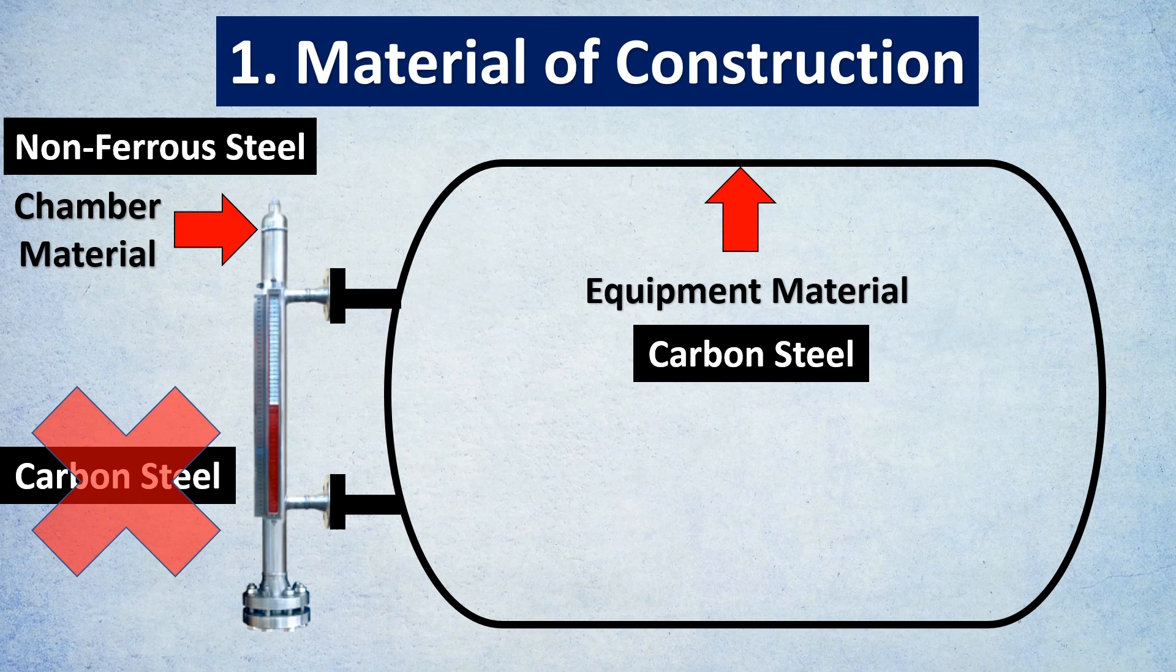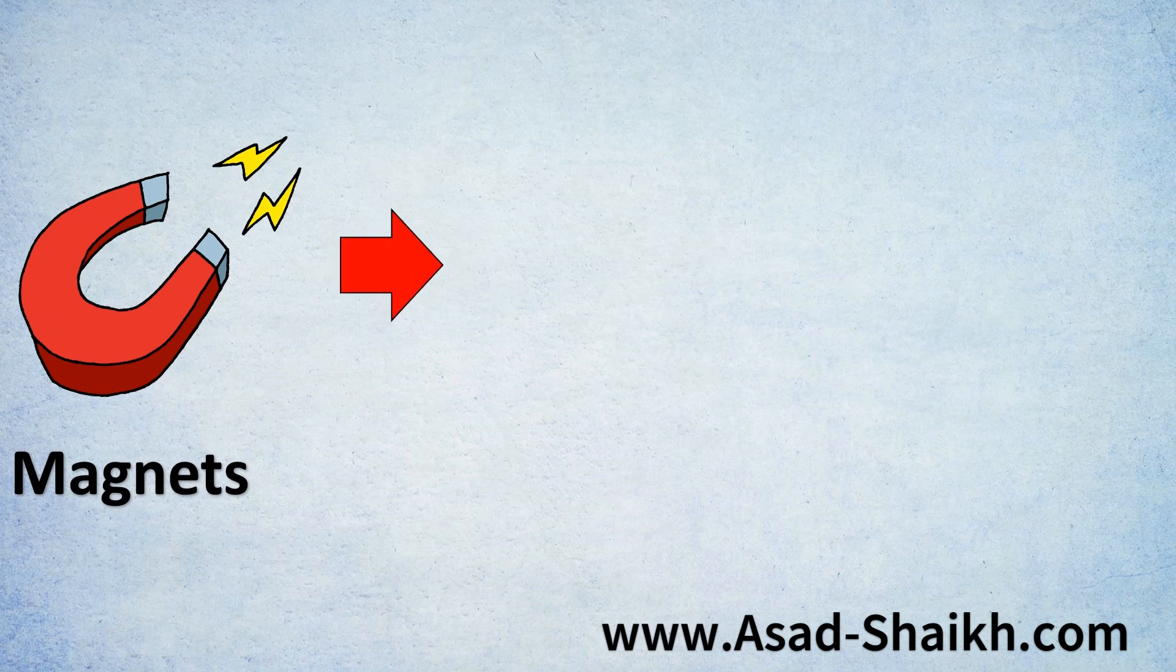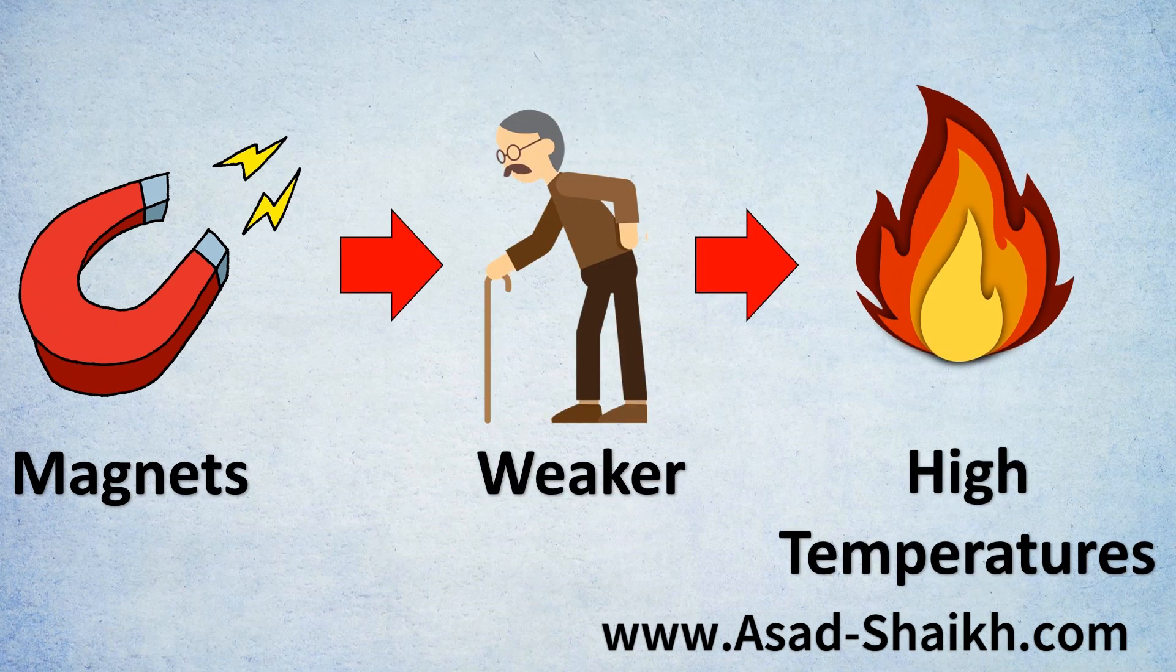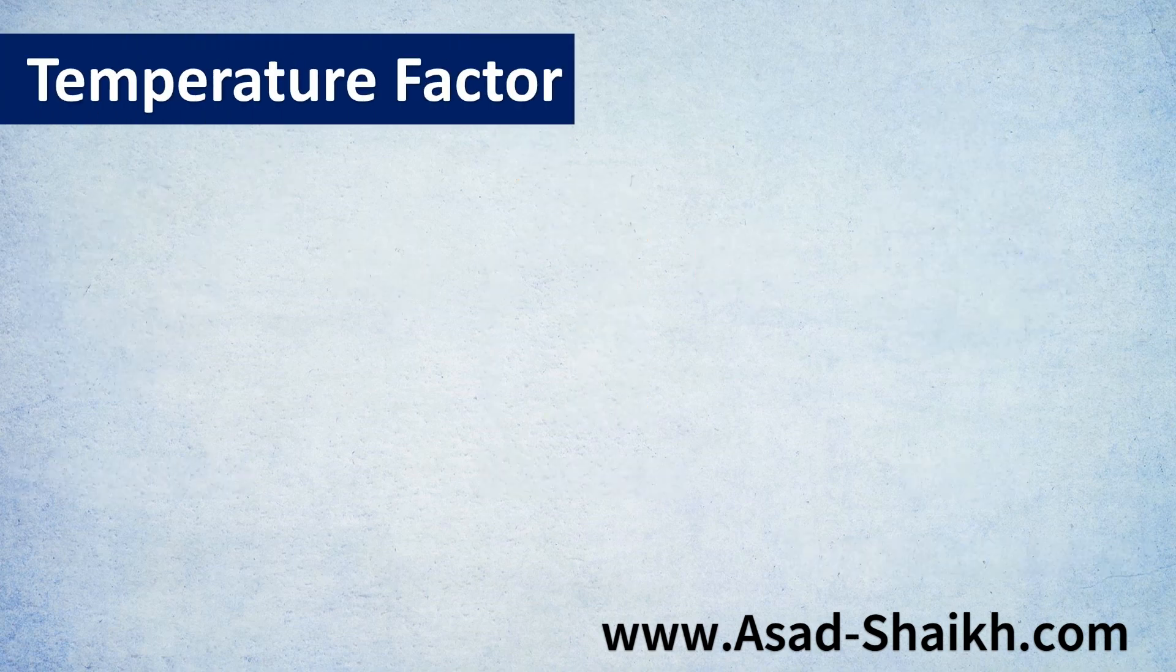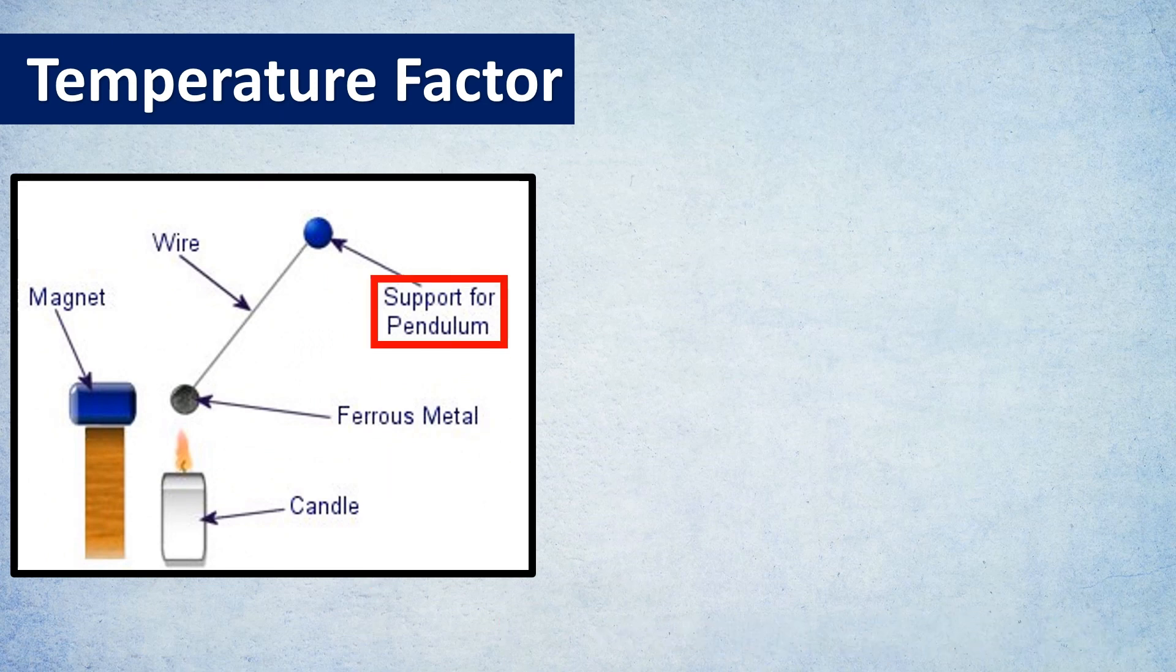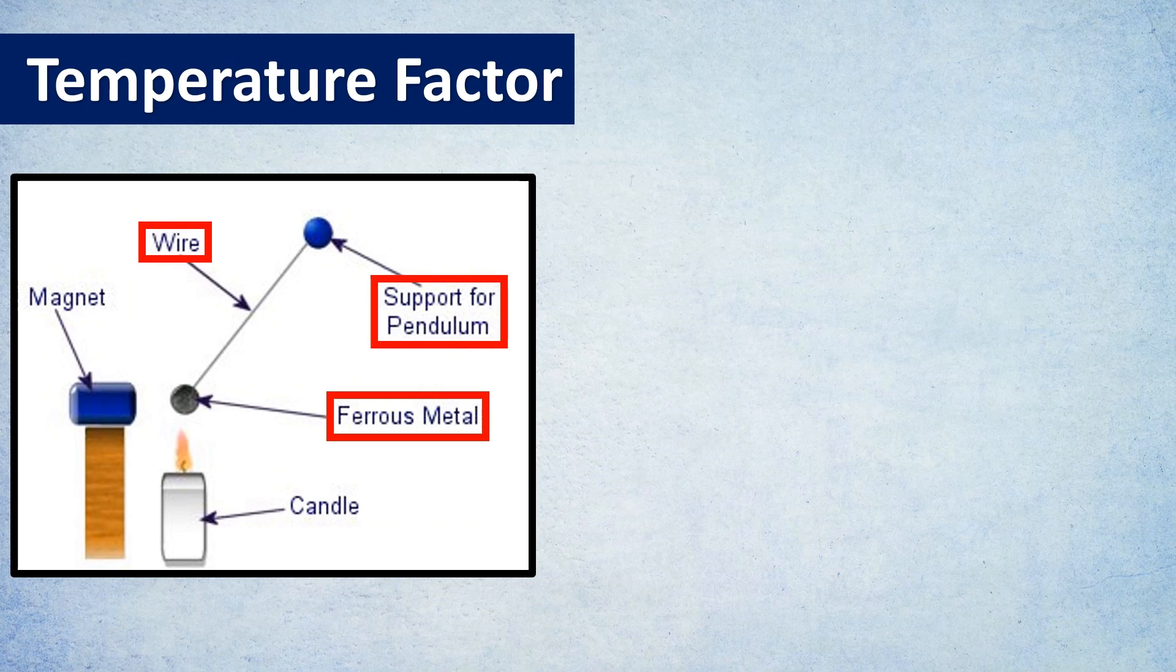As a general rule of thumb, magnets tend to become weaker at higher temperatures. Let us understand this beautiful example with an experiment. Let's see the temperature factor with an assembly where we have a support system, a wire where a ferrous material is attached to it, a candle to raise the temperature, and a magnet.